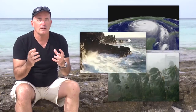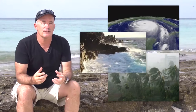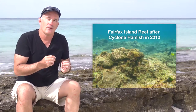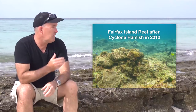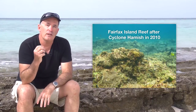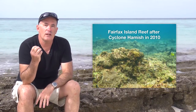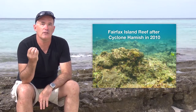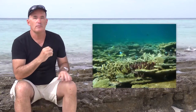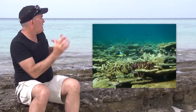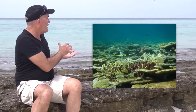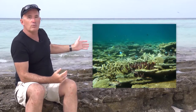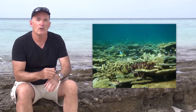Storms such as cyclones, typhoons and hurricanes can completely decimate coral reefs as shown in this photograph here. However, if events like big storms don't happen very often, coral reefs can naturally recover from them. A storm might hit a reef like this one, but over 10 to 20 years those corals will come back and rebuild the coral community.